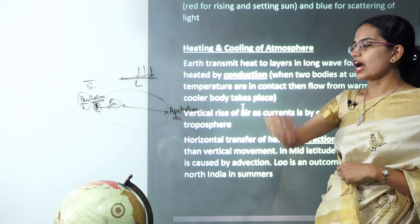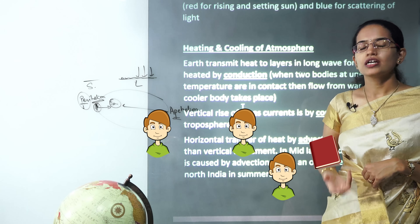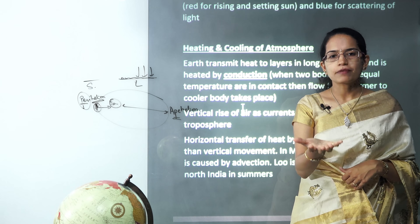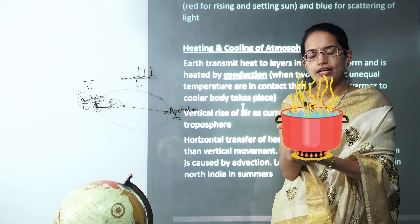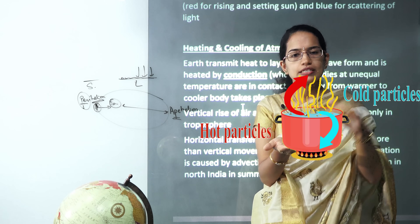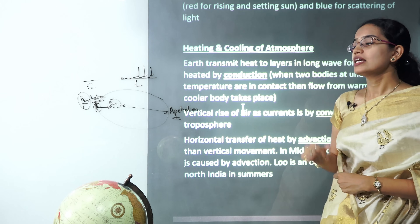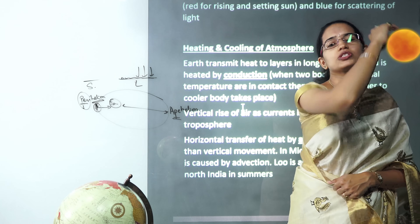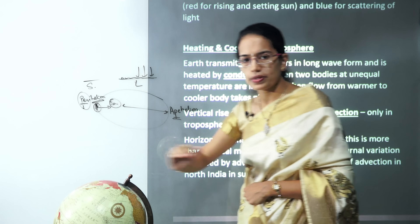Next is convection. Instead of passing the book along, the last student gets up, walks to the front, and hands it directly — that is convection. In a boiler, water close to the burner gets very hot; hot particles move up and cold particles come down, creating convective circulation in the atmosphere as well. Next is radiation — the student simply throws the book, just as the sun throws light onto us. That is radiation.